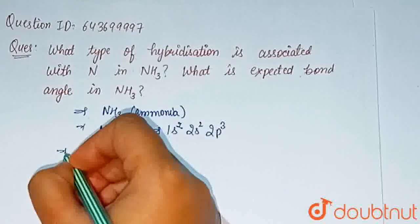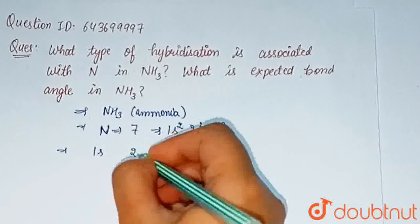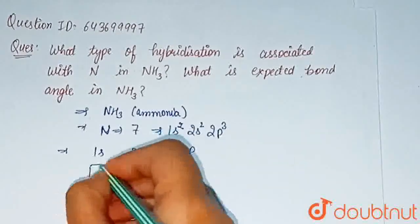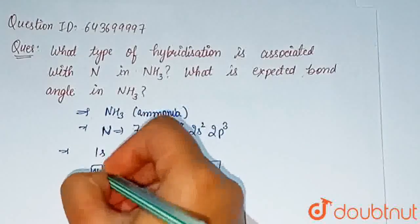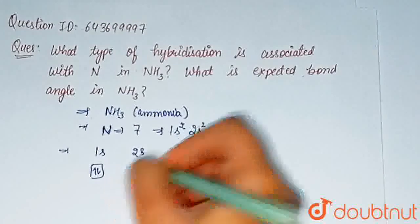Let us draw the orbital. 1s, 2s and 2p. In 1s orbital there are 2 electrons, in 2s orbital there are 2 electrons.